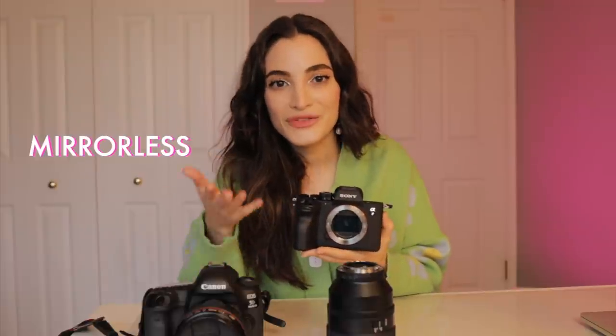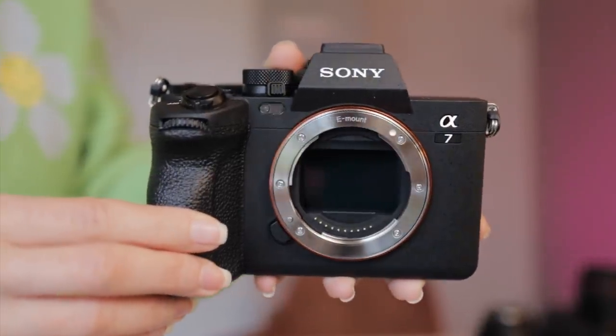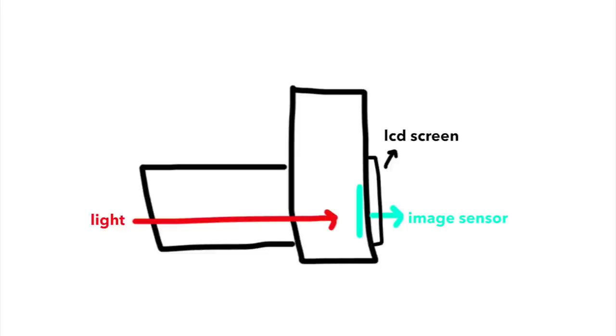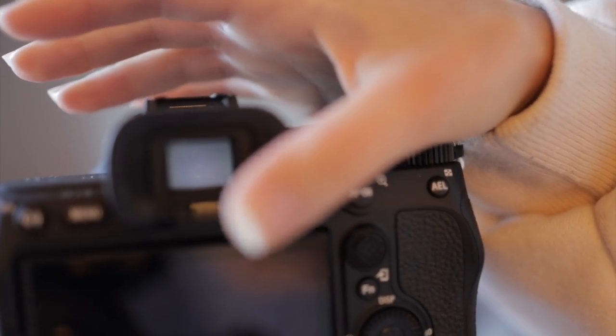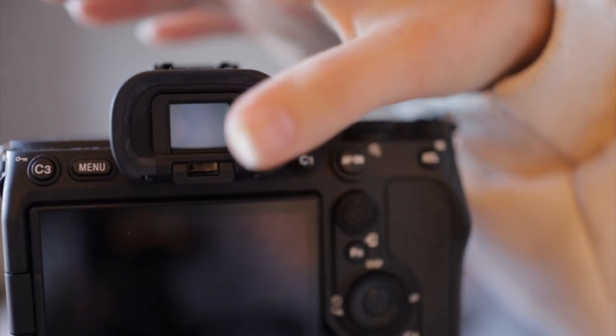With mirrorless cameras, it's in the name — they don't have that mirror system. When you take a photo, the light goes through the lens and then straight onto the sensor to be processed. That image is then displayed on the back monitor, or in the EVF, which is the electronic viewfinder — which is different from the optical viewfinders found on DSLRs.